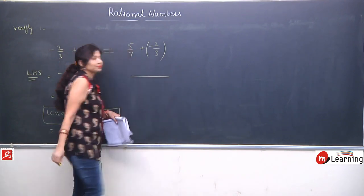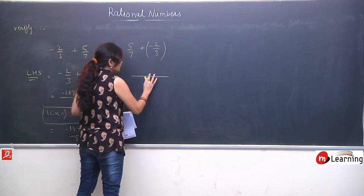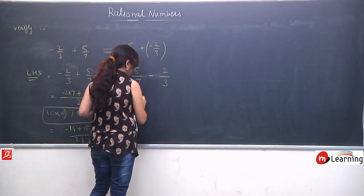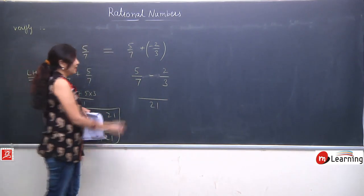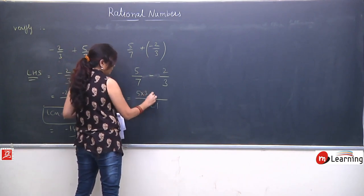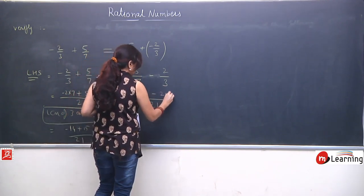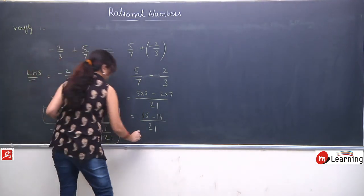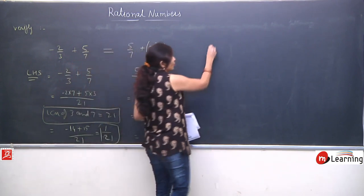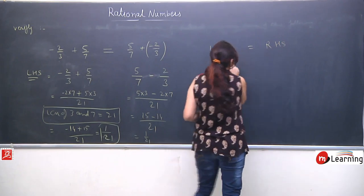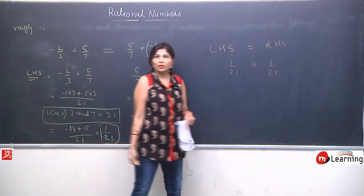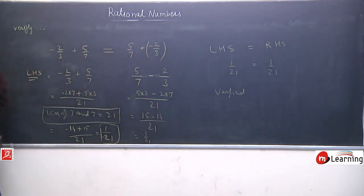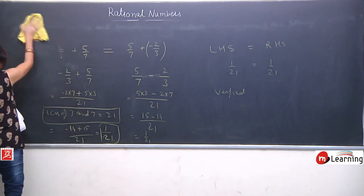Now solving RHS: 5/7 + (−2/3) = 5/7 − 2/3. LCM of 7 and 3 is 21. We get 5×3 = 15 and 2×7 = 14, so 15 − 14 upon 21 = 1/21. LHS equals RHS — both equal 1/21. So it is verified. We needed to solve both LHS and RHS and check that they are equal. This was a simple question demonstrating commutativity.